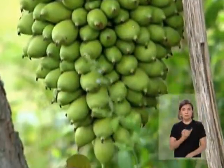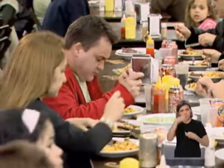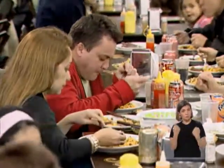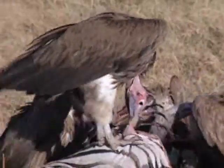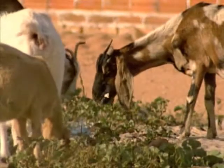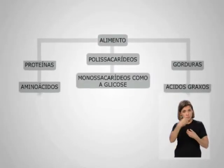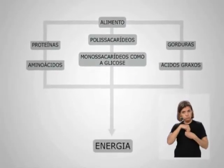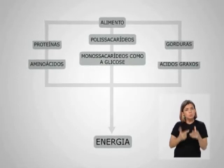Um desses processos é a alimentação. É através dela que os seres vivos extraem as moléculas orgânicas essenciais para obtenção de energia e para formar seus tecidos e células. A obtenção de energia é possível graças à oxidação das moléculas orgânicas contidas nos alimentos. Essa energia será usada em todos os outros processos vitais do organismo.